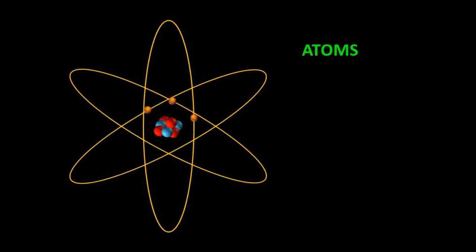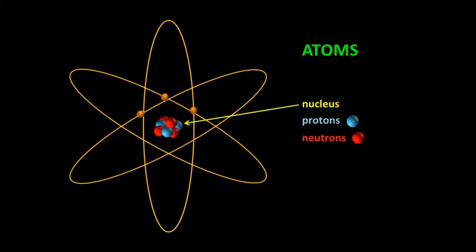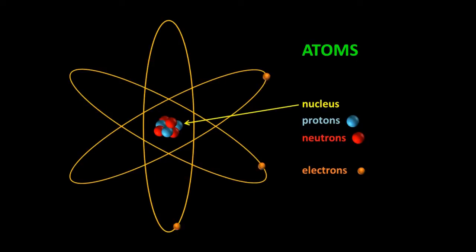We now know that all atoms are made of what's called a nucleus, made up of two types of particles called protons and neutrons, which is surrounded by much smaller particles called electrons that move around the nucleus at enormous speeds.